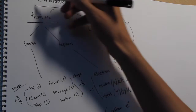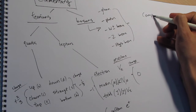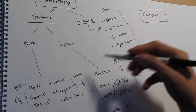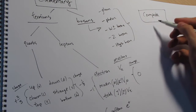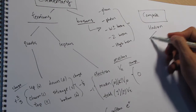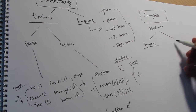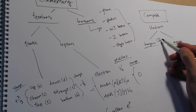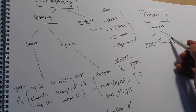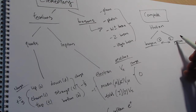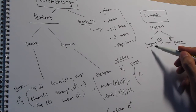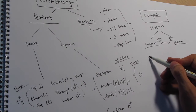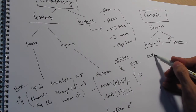Now we can go to the composite particles, which are particles made of the smaller particles I just explained. These are called hadrons. Hadrons have two categories: baryon and meson. The main difference is that a baryon is consisted of three quarks, while a meson is made of two quarks. The common baryons are ones we have all heard of, which include the proton and neutron.